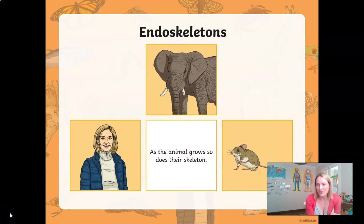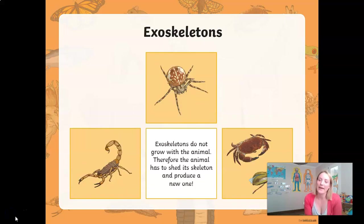So what makes endoskeleton creatures — remember, those are vertebrates — special? Well, an endoskeleton is important because it grows with the animal as the animal grows. When you're a baby, your bones are much smaller, and as you grow, your bones grow with you. Whereas exoskeleton creatures, on the other hand, their skeleton does not grow with them — as the creature gets bigger, it has to shed its old skeleton, similarly to how snakes shed their skin and grow a new one.